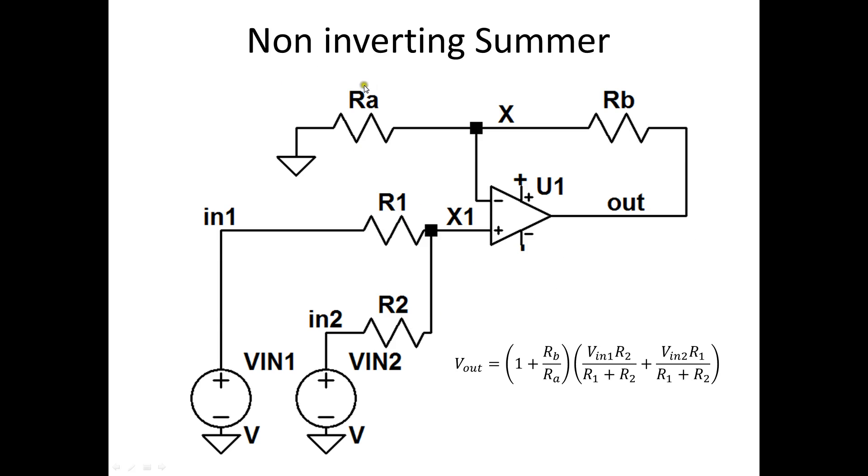Let's talk about the non-inverting summer. And the response looks a little more complicated. But you can see we have 1 plus Rb over Ra, which might look familiar because that's a non-inverting amplifier gain. And then we have two voltage divisions. Well, where does that come from?